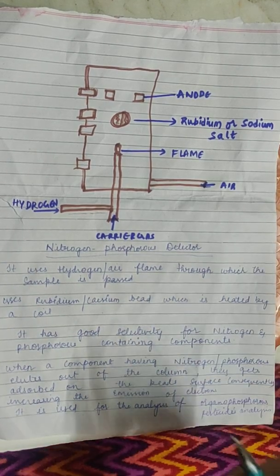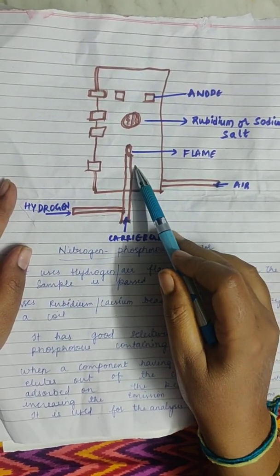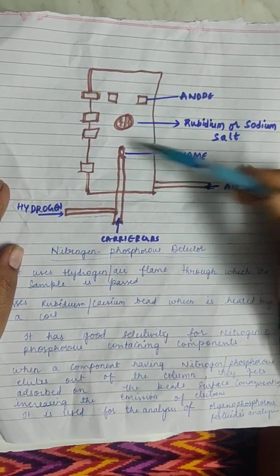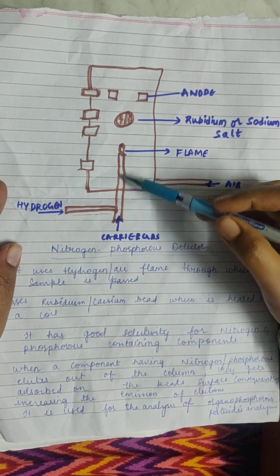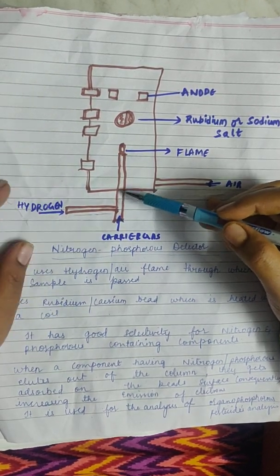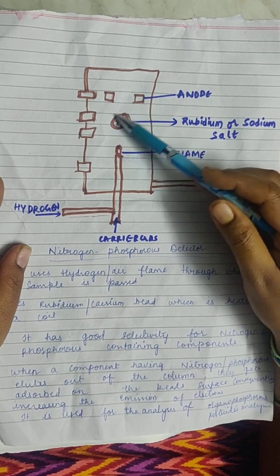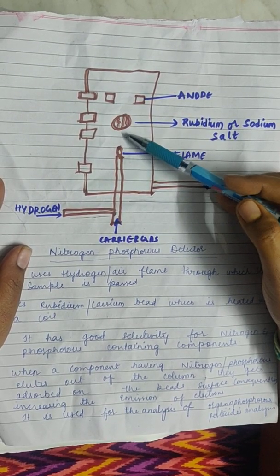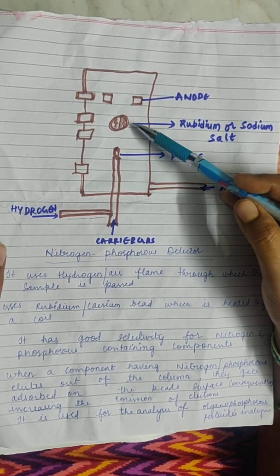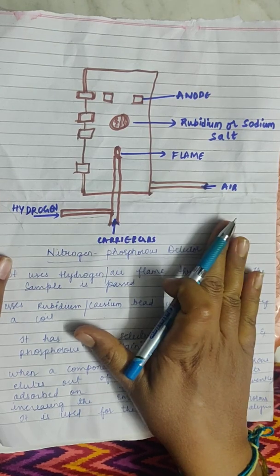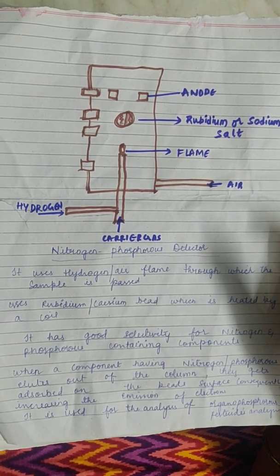In the diagram: hydrogen is pumped in from one inlet and air from another, generating a flame. There is a rubidium, sodium salt, or cesium salt crystal present. The carrier gas pumps eluents into the detector — if they contain nitrogen or phosphorus, they are partly ionized in the presence of the flame and adsorbed on the crystal. The resulting increase in electron emission is detected, but this detector is very selective and works best for nitrogen and phosphorus derivatives and organophosphorus pesticides.